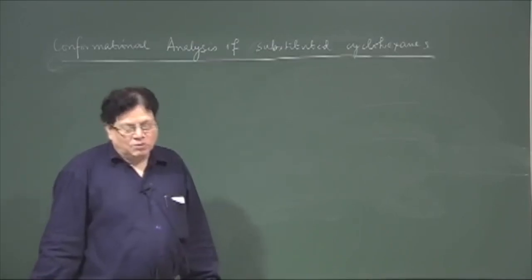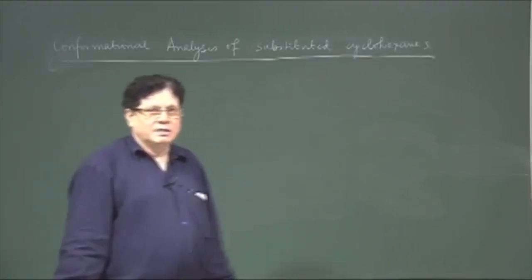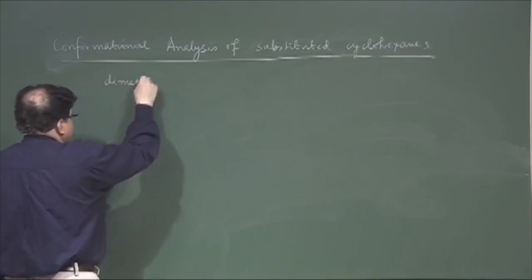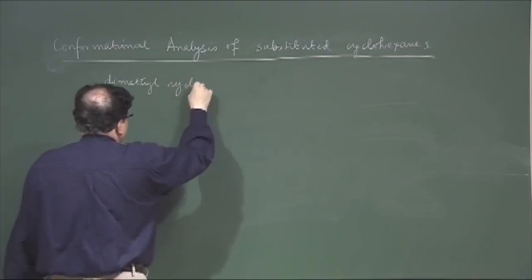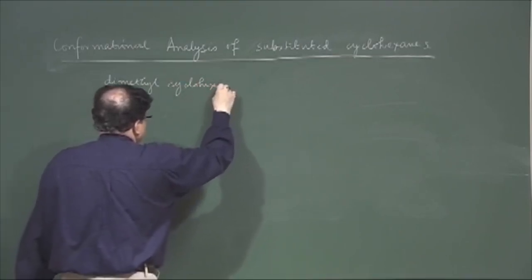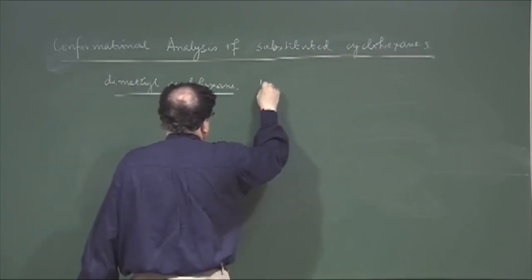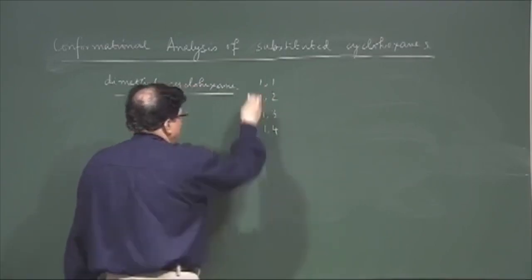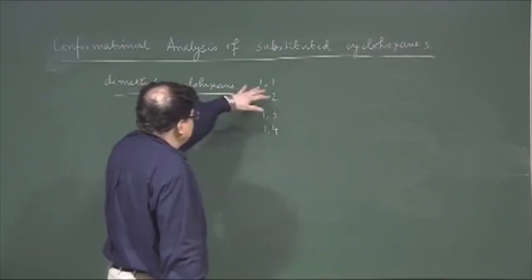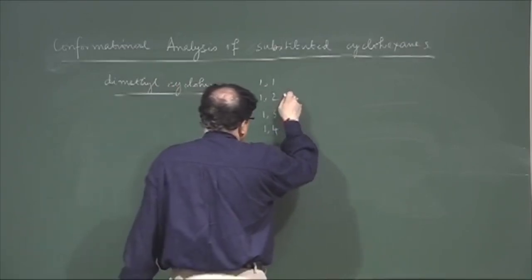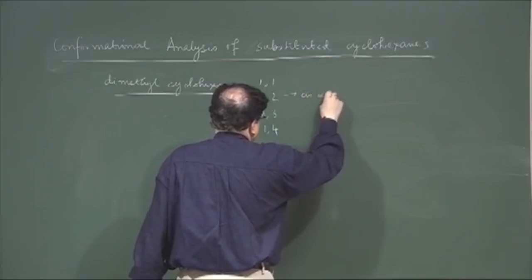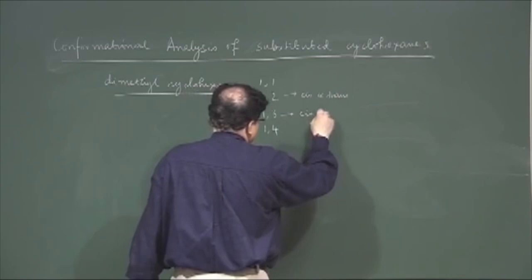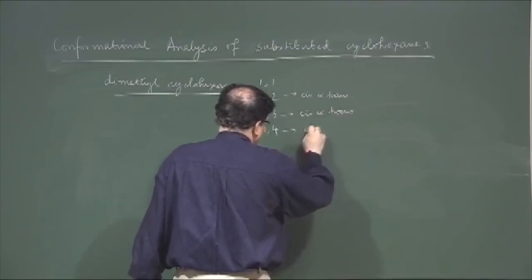Let us again come back and do the conformational analysis of substituted cyclohexanes. So far we have done the dimethylcyclohexanes as our representative example, and this can be 1,1-, 1,2-, 1,3-, and 1,4-. In 1,1- there is no question of cis or trans arrangement. In 1,2- you have cis and trans dimethylcyclohexane, and here also cis and trans, and this is also cis and trans.